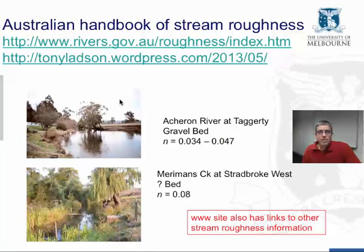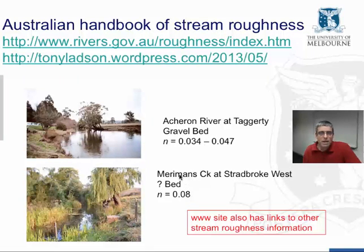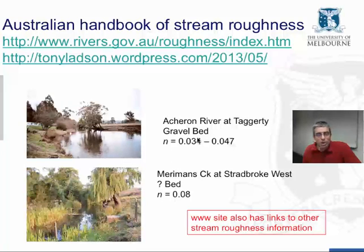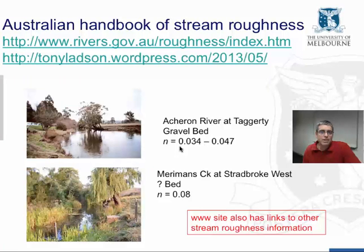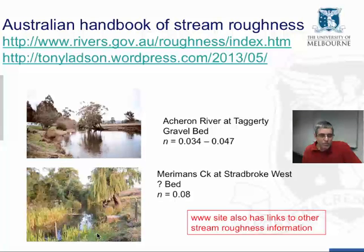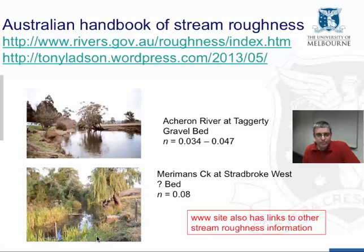Here's some of the data from the Australian example. We can see two river channels, the Acheron River at Taggarty and Merrimans Creek at Stradbroke West. And we see that the Manning's n's are quite a bit higher than what we saw in the lookup table before for artificial channels. So for the Acheron River, which actually doesn't have a great deal of vegetation on the river banks, the Manning's n is still quite high, somewhere between 0.034 to 0.05. In Merrimans Creek, it's quite a bit higher. It's 0.08. And the reason for this is there's a large amount of roughness in the form of vegetation, both within the channel and on the stream banks, which provide flow resistance. So in this channel, in Merrimans Creek, we would see a greater depth, all else being equal than in the Acheron River.